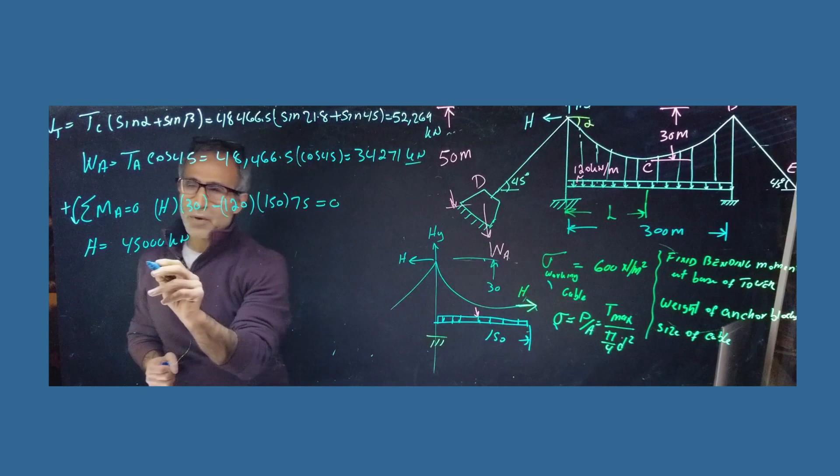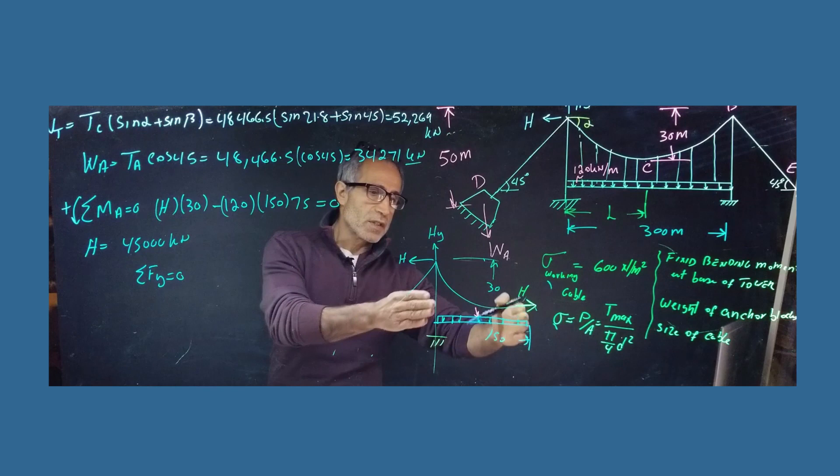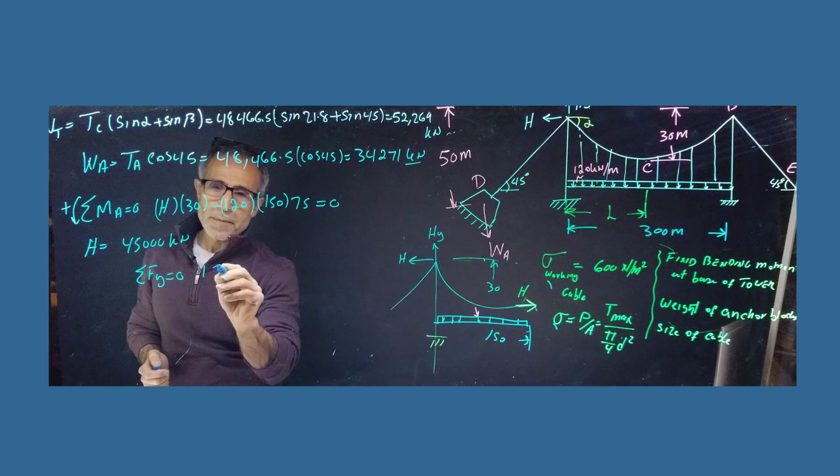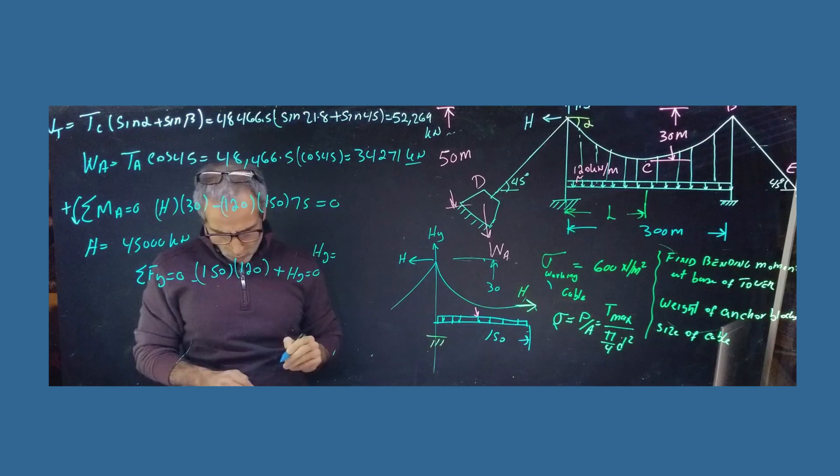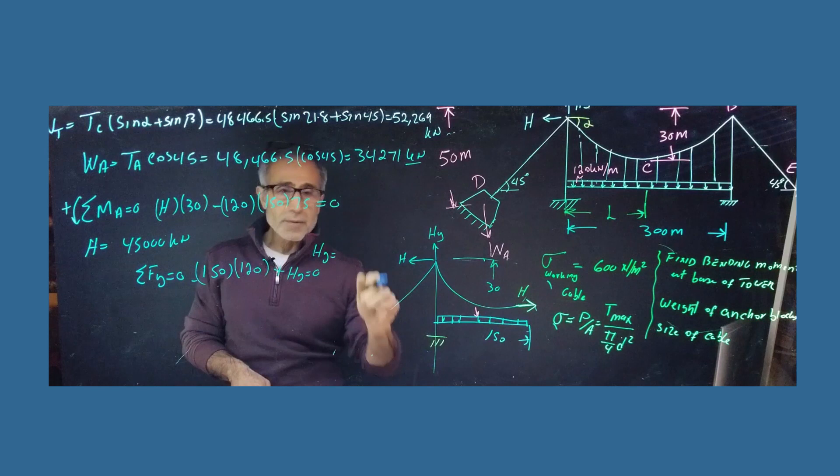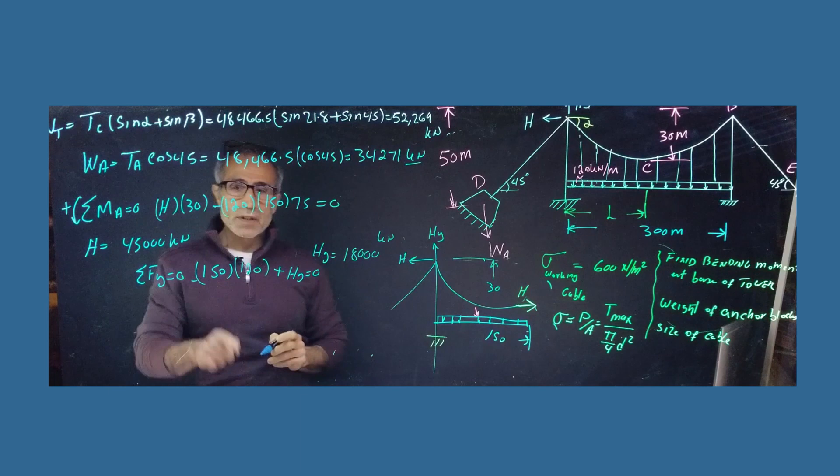And we take a summation F of Y, let's find that one, the vertical portion of that, summation F of Y equals 0. So, all we have is this vertical force and nothing else. And that's going to be 150 times 120. And maybe going down minus plus HY is equal 0. And my HY is going to come out to 18,000. 18,000 kilonewton.